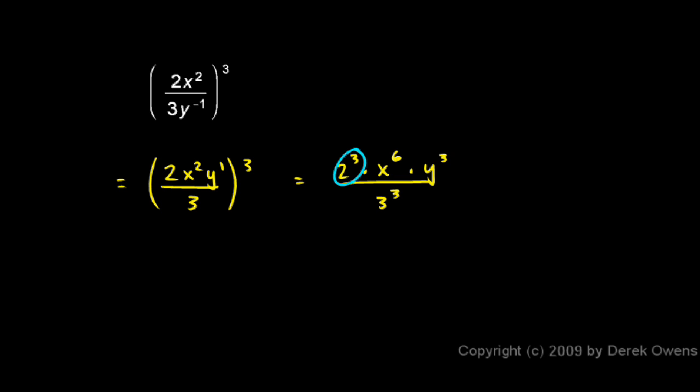And these numbers, two cubed is just eight. And three cubed is three times three times three, which is 27. So we have eight x to the sixth, y cubed over 27. And that's our final answer. It can't be simplified any further.